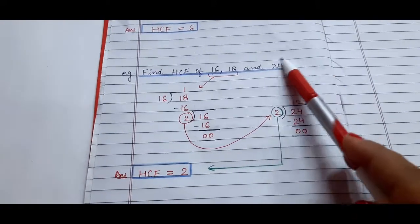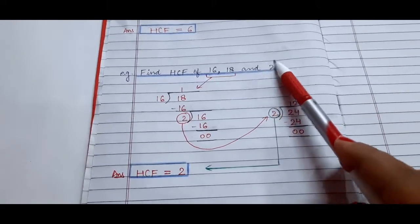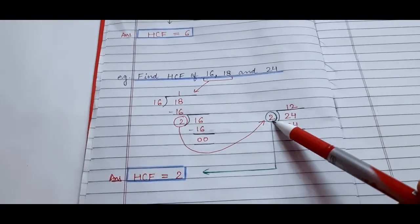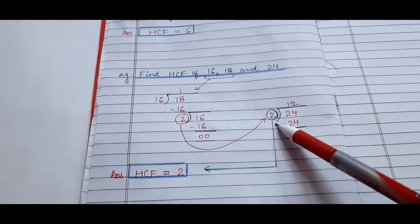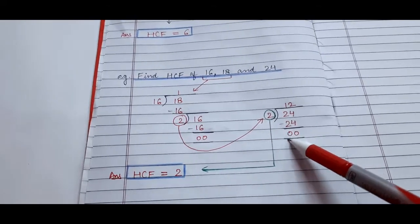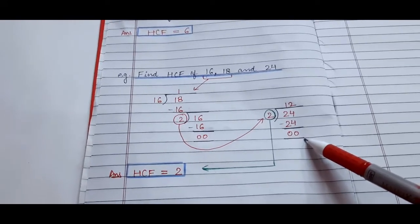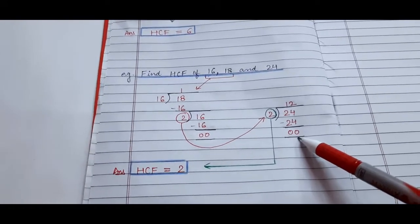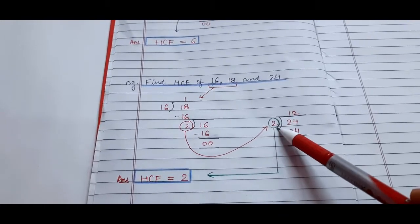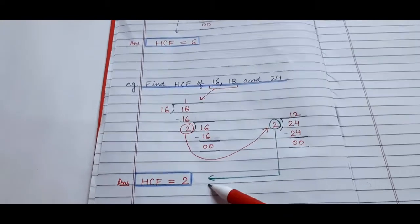But what about the third number? For this third number, we will again use this number here and divide 24 by 2. Now see, 2 twelves are 24 and remainder is 0. Since this is the last part, the divisor is 2, and hence this is our HCF.